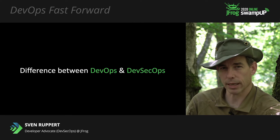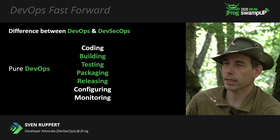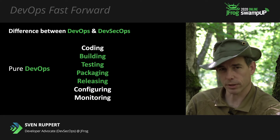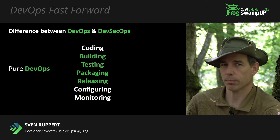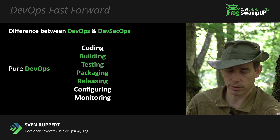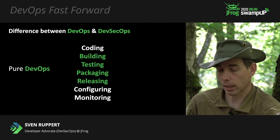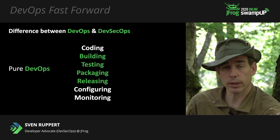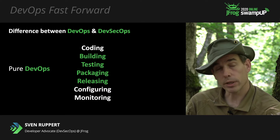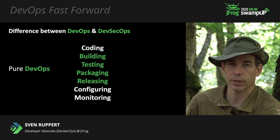The difference between DevOps and DevSecOps. If you look at Wikipedia, DevOps is a well-defined thing with a lot of books written about it. The key points of pure DevOps cover the process from coding, building, and testing software, up to packaging, releasing, and then running — configuration and monitoring of productive systems. It's purely focused on development itself, with no special part for performance, quality, or security.